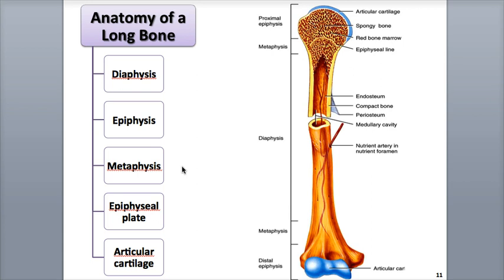Each metaphysis contains a layer of hyaline cartilage called the epiphyseal plate, or growth plate, that causes the diaphysis of the bone to grow lengthwise. This growth stops in our mid to late teens and early 20s as the cartilage is replaced by bone and is now referred to as the epiphyseal line. Surrounding the area of the epiphyses that forms a joint, also called an articulation, is a layer of hyaline cartilage called the articular cartilage. It helps protect the ends of the bone, acting as the joint's shock absorber, and helps minimize friction where bone meets bone to produce a smoother range of motion.